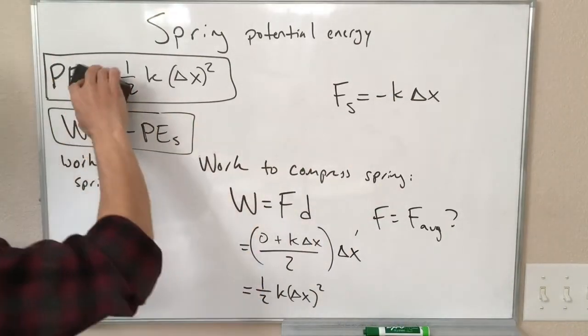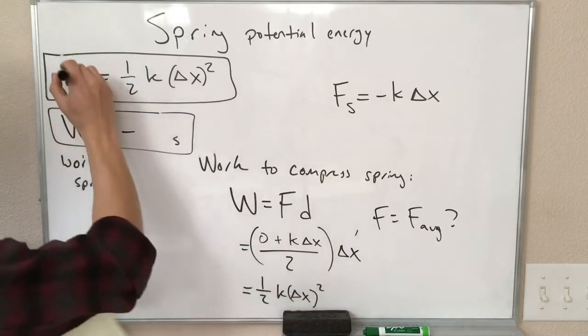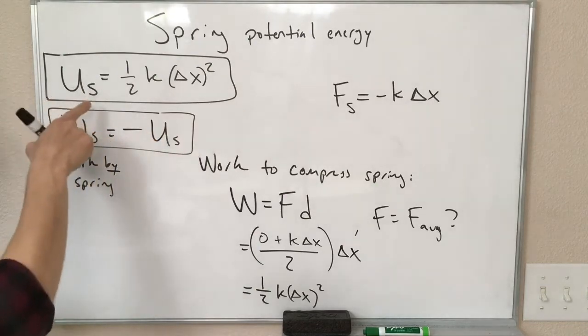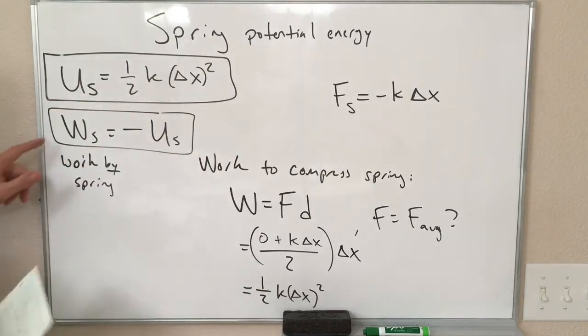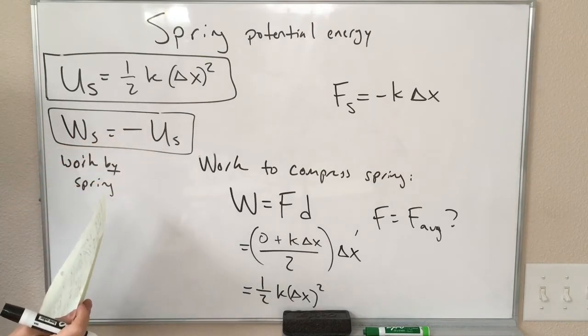And now I'm going to change these PEs to Us because I forgot to do that. U is what we use for potential energy. So the potential energy U of the spring is equal to one half k delta x squared. The work of the spring is equal to minus the potential energy of the spring.